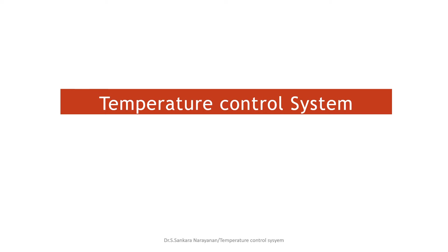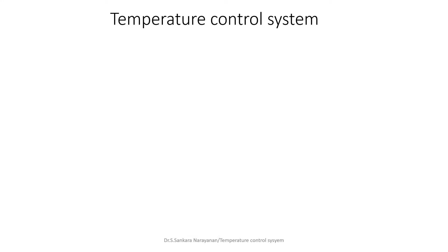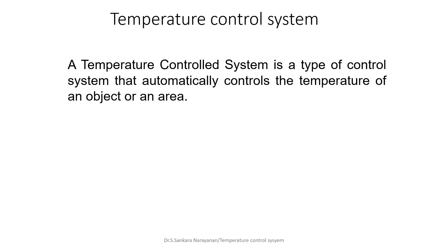In this video I'm going to talk about the temperature control system used in microprocessors. A temperature control system is a type of control system that automatically controls the temperature of an object or an area. The object may be any object, and the area may be a room or any space of whatever size.